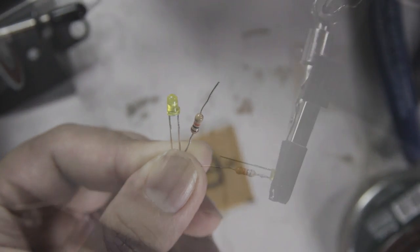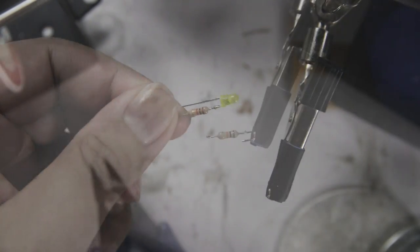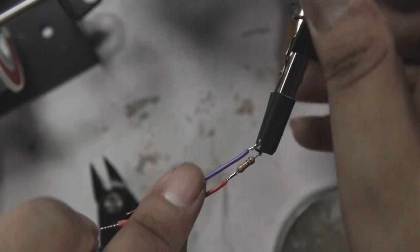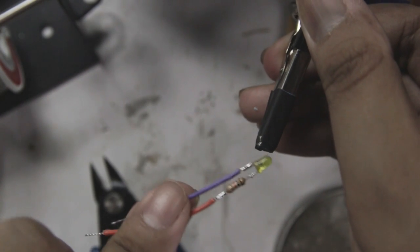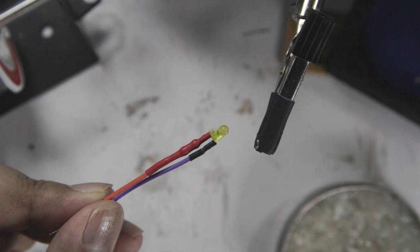Next, we solder a 10K resistor to one of the LED leads. Then, we extend the leads with some wires. It's a good idea to cover all connections here with heat shrinking tubes.